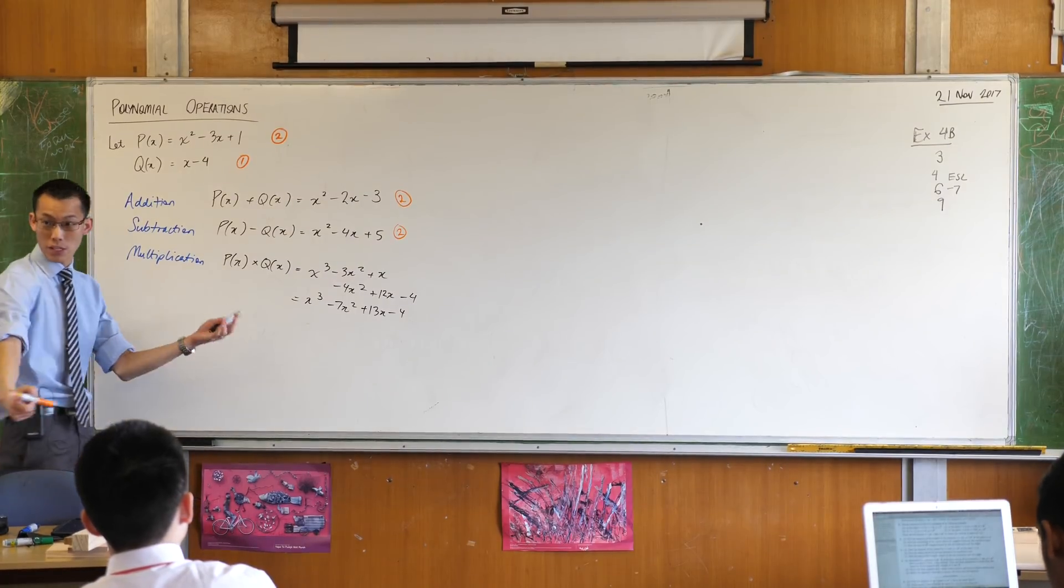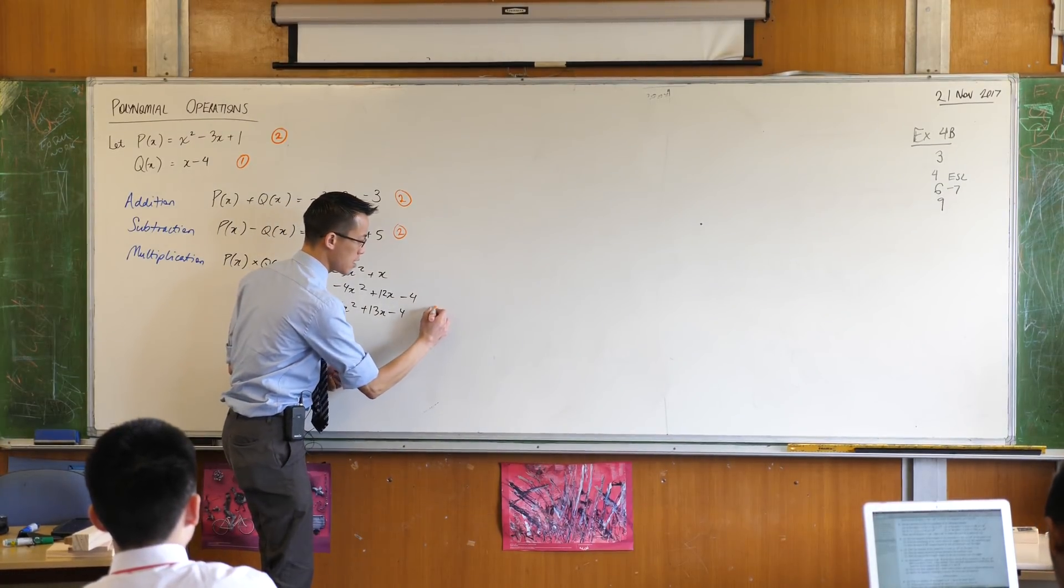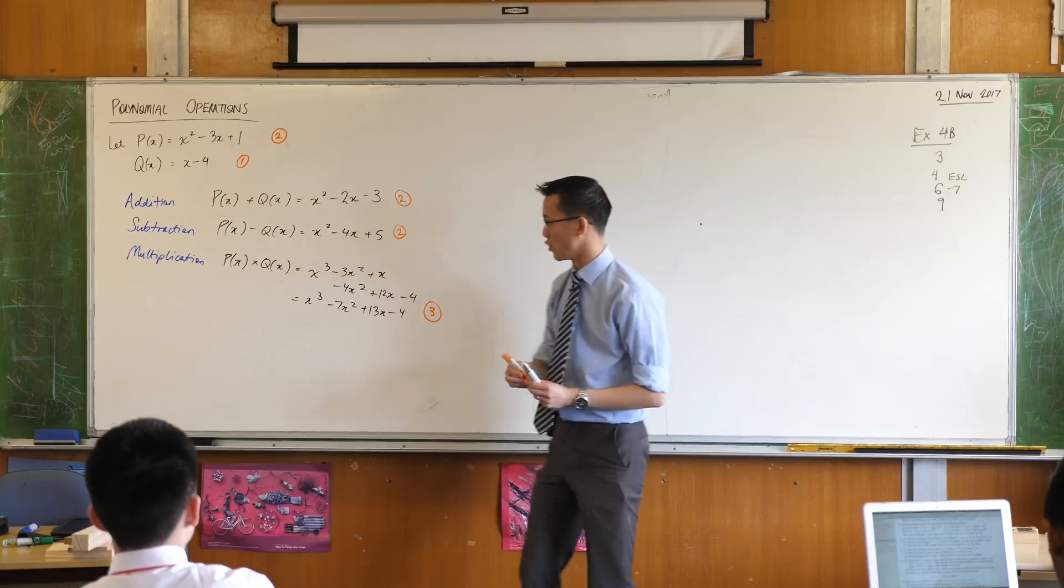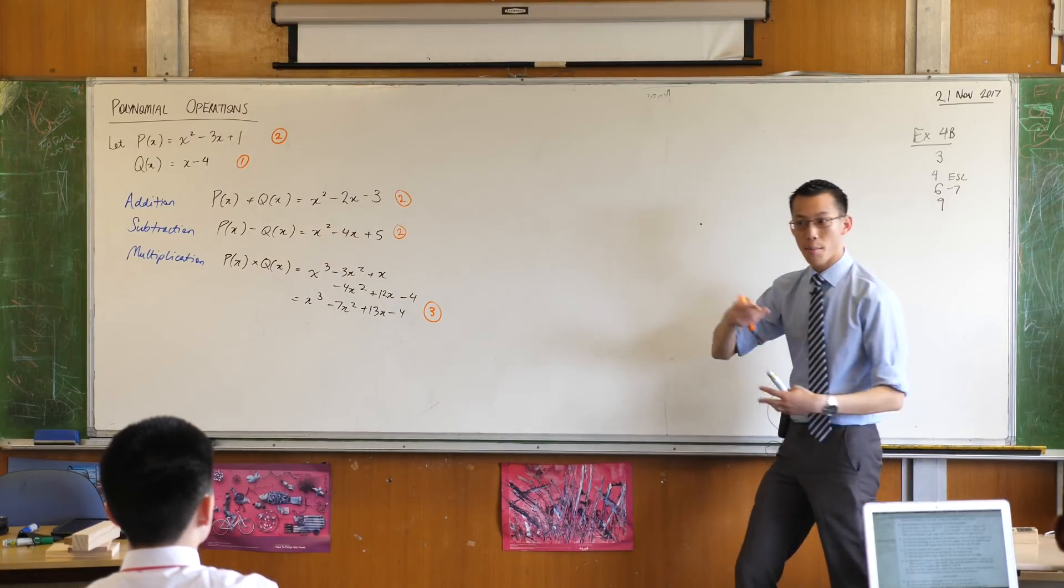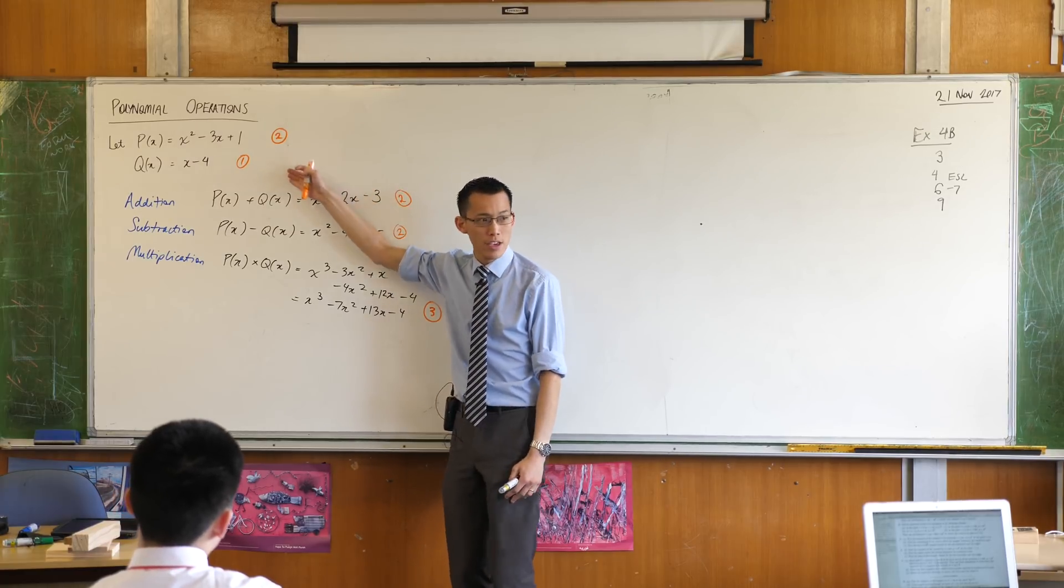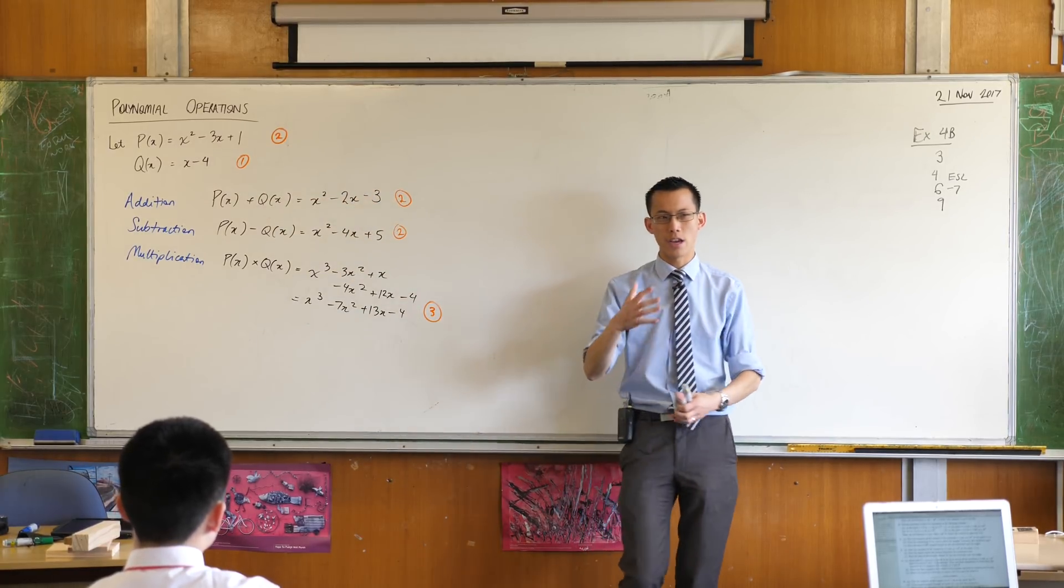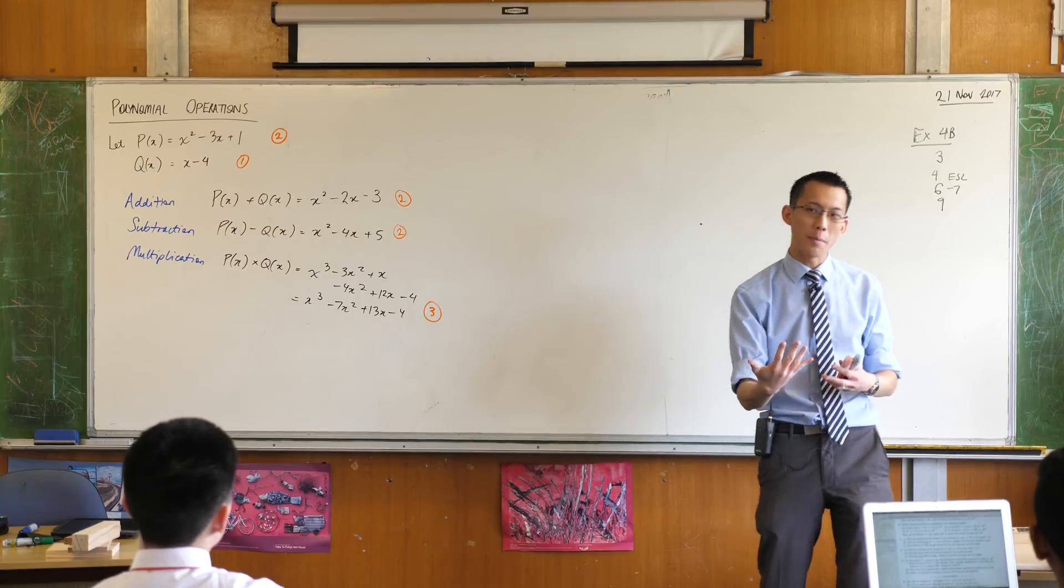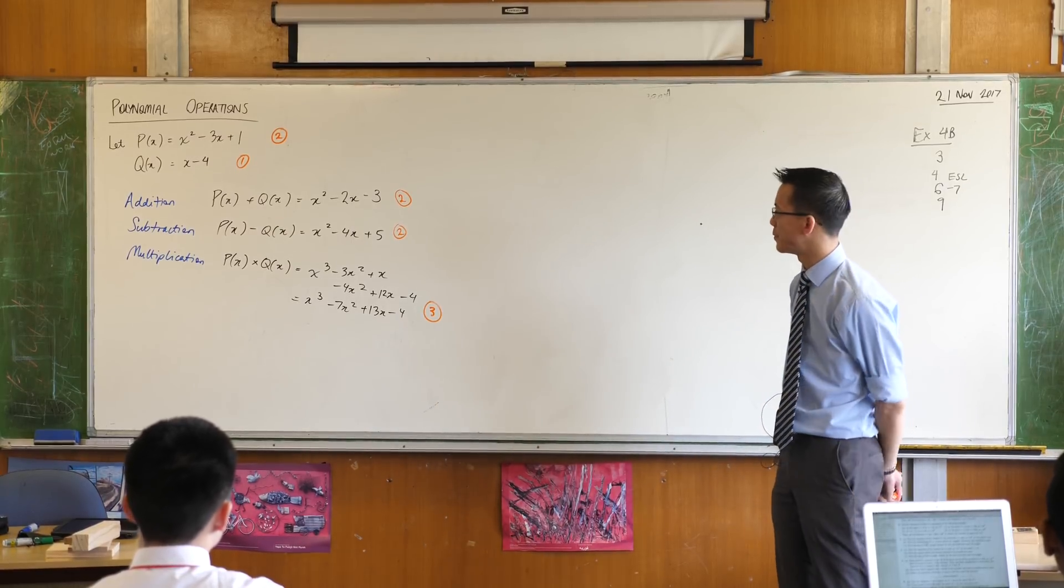So as we predicted, because we know our index laws, the degree of our products of these two polynomials is the sum of the degrees of the two polynomials you started with. If I had a quadratic and a cubic, you'd expect this thing down here to have a degree of 5. That would be a quintic. Not that they come up very often.